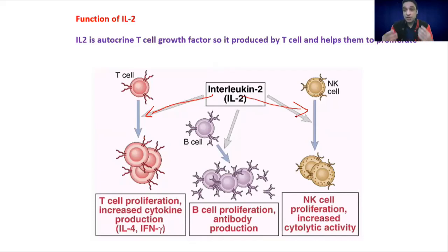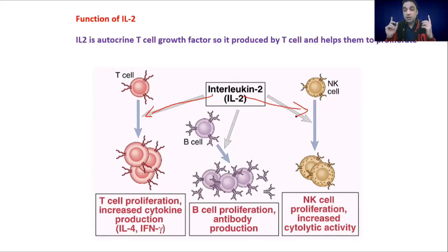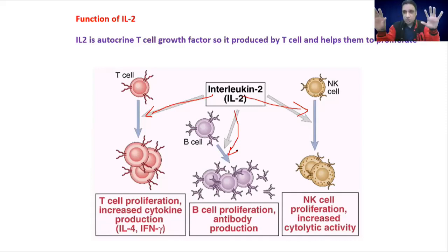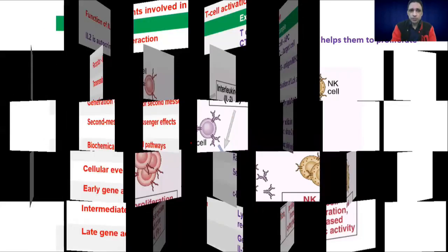Natural killer cells are generally present in our immune system to kill bad things. If interleukin-2 is present, it signals something is not right in the body, so natural killer cells increase their numbers to fight the threat. Interleukin-2 also activates B cells, helping them to produce more plasma cells and more antibodies. So interleukin-2 actually affects the overall function of the immune system — it is a very critical cytokine.